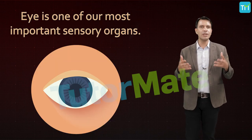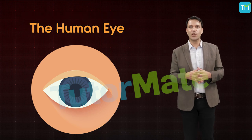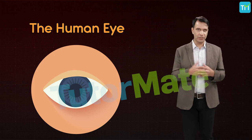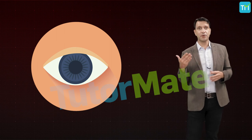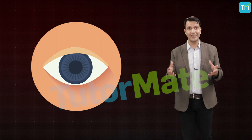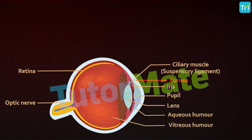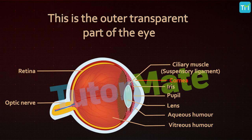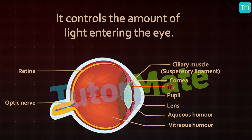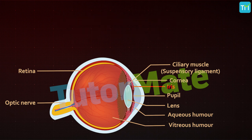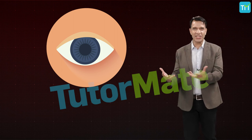The eye is one of our most important sensory organs. The human eye is an organ which reacts to light and pressure. As a sense organ, the mammalian eye allows vision; human eyes help provide a three-dimensional, moving, normally colored image in daylight. Starting with the cornea — this is the outer transparent part of the eye, tough enough to protect the interior from accidents. Next is the iris, a thin circular structure that works like the shutter of a camera, controlling the amount of light entering the eye.